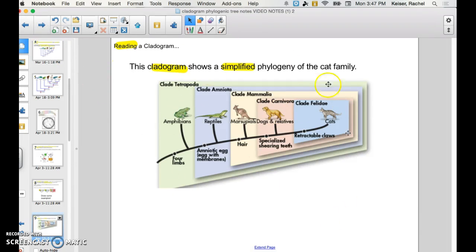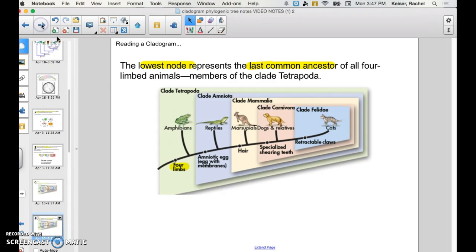So this cladogram right here shows a simplified evolution of the cat family. So all species related to cats. And what this phylogeny shows or this cladogram shows is how all tetrapods have evolved. So tetrapods are four-limbed species. So let's take a look.